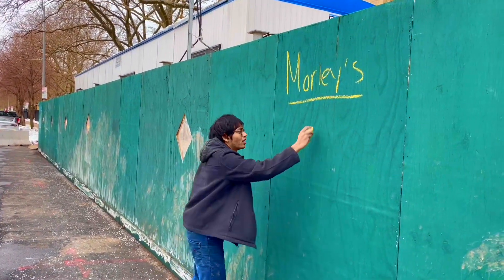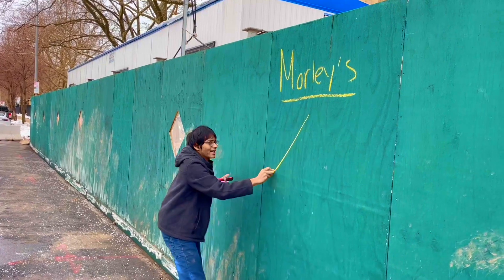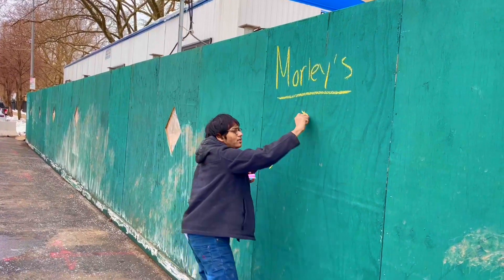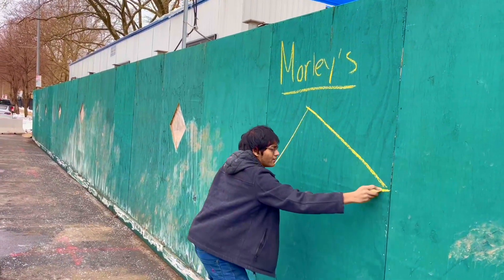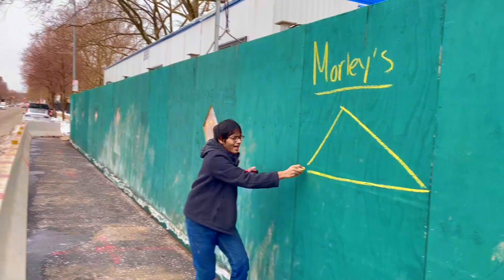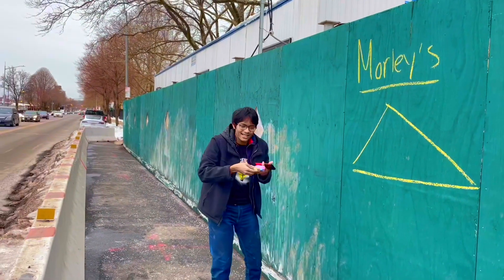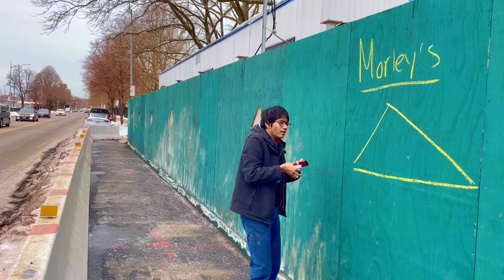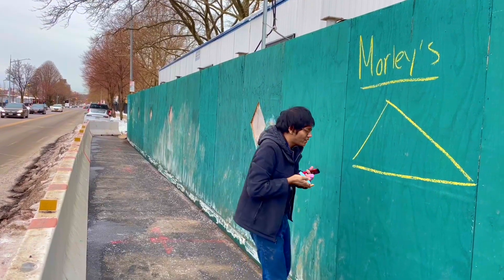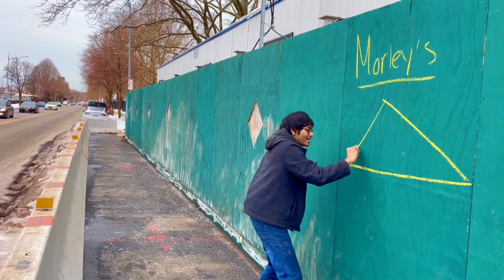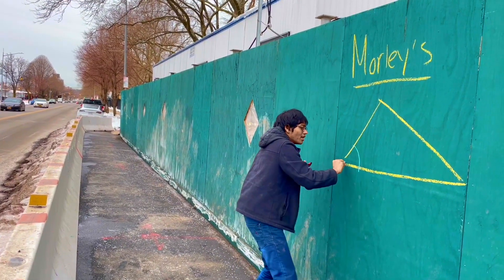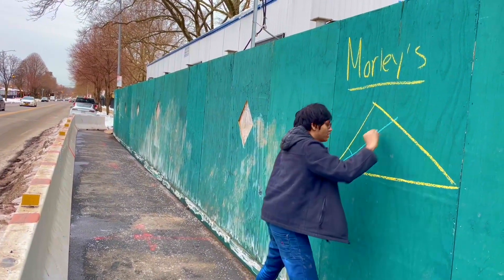Take any triangle and trisect each of its angles. What do we mean by trisect? Well, take each angle and cut it in thirds.